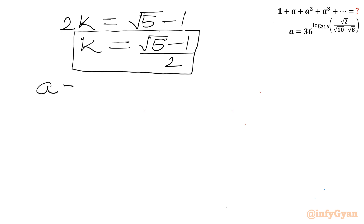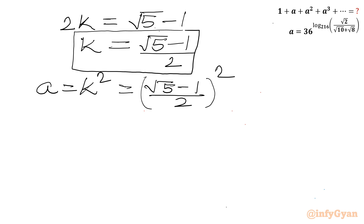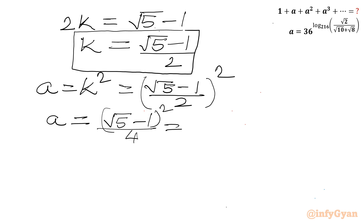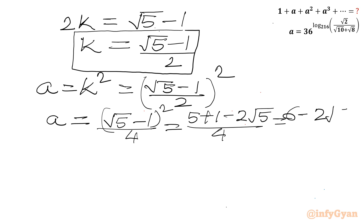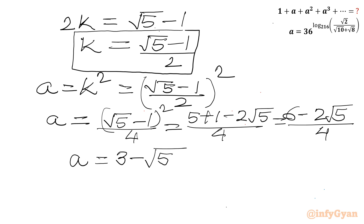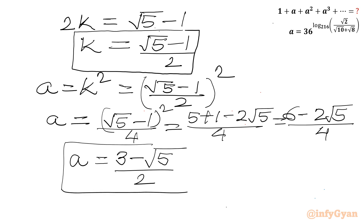Since a = k², we write a = ((√5 − 1)/2)². Expanding the square: a = (√5 − 1)² / 4 = (5 + 1 − 2√5) / 4 = (6 − 2√5) / 4, which simplifies to a = (3 − √5) / 2.